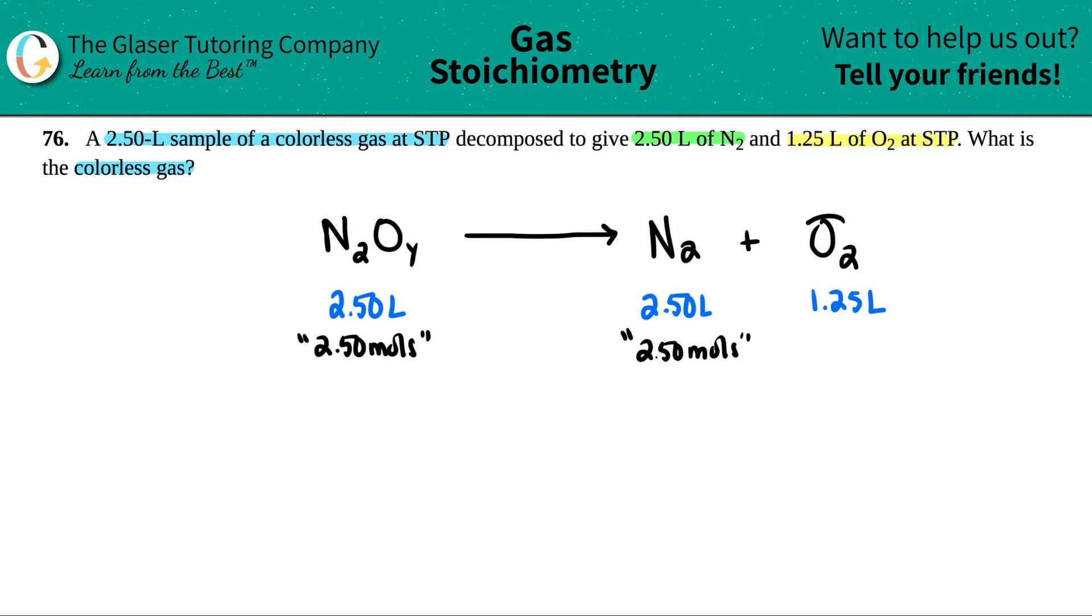Well, if we had 1.25 liters of O2, and I have 2.5 liters of this, what do you think is going to happen? Or what do you think the ratio is? Well, it looks like this amount is two times more than this amount. Now this is where we have to do some balancing.